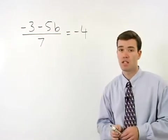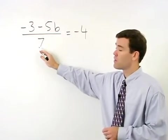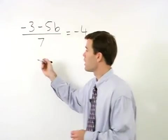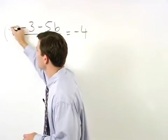So in the problem you see here, since the denominator of our fraction is 7, we get rid of the fraction by multiplying both sides of the equation by 7.